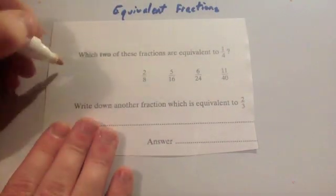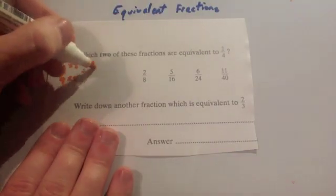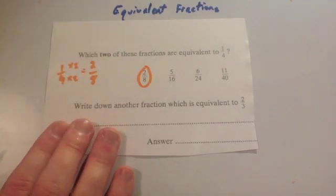Well, if I take my quarter and I times the top number by 2 and times the bottom number by 2, I'd get 2 over 8. So that is one of the equivalent fractions straight away.